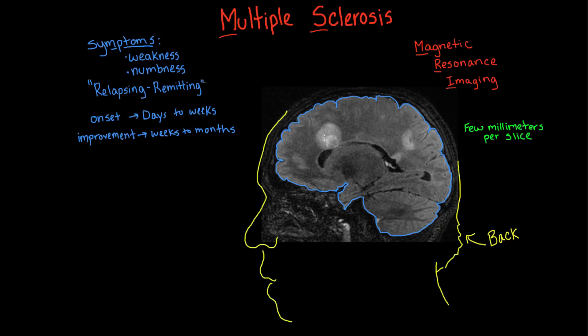Why does it happen in the first place and how does it improve? What we think is happening is that the immune system appears to be attacking some of the tissue of the brain and often the spinal cord. Normally the immune system is supposed to be fighting off infections, but in multiple sclerosis, for reasons that are unclear, the immune system is actually attacking some of the body's own tissues. That circled area on the scan is an inflamed region where the immune system is attacking parts of that brain tissue.